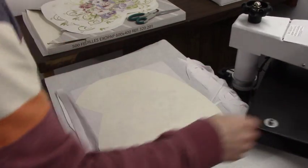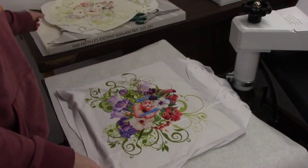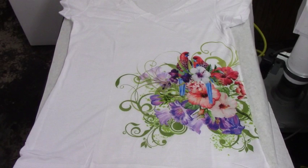After the pressing is complete, remove the shirt and transfer paper from the press. Remove the transfer paper from the fabric. Congratulations! You have successfully dye-sublimated onto a shirt.